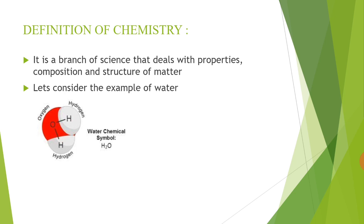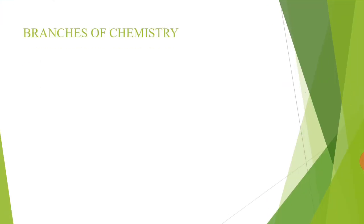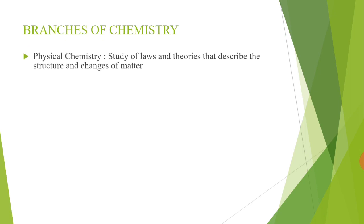I hope you understand the definition of chemistry. Now we discuss the branches of chemistry. There are various branches of chemistry. First, we discuss physical chemistry. Physical chemistry is the study of laws and theories that describe the structure and changes of matter.